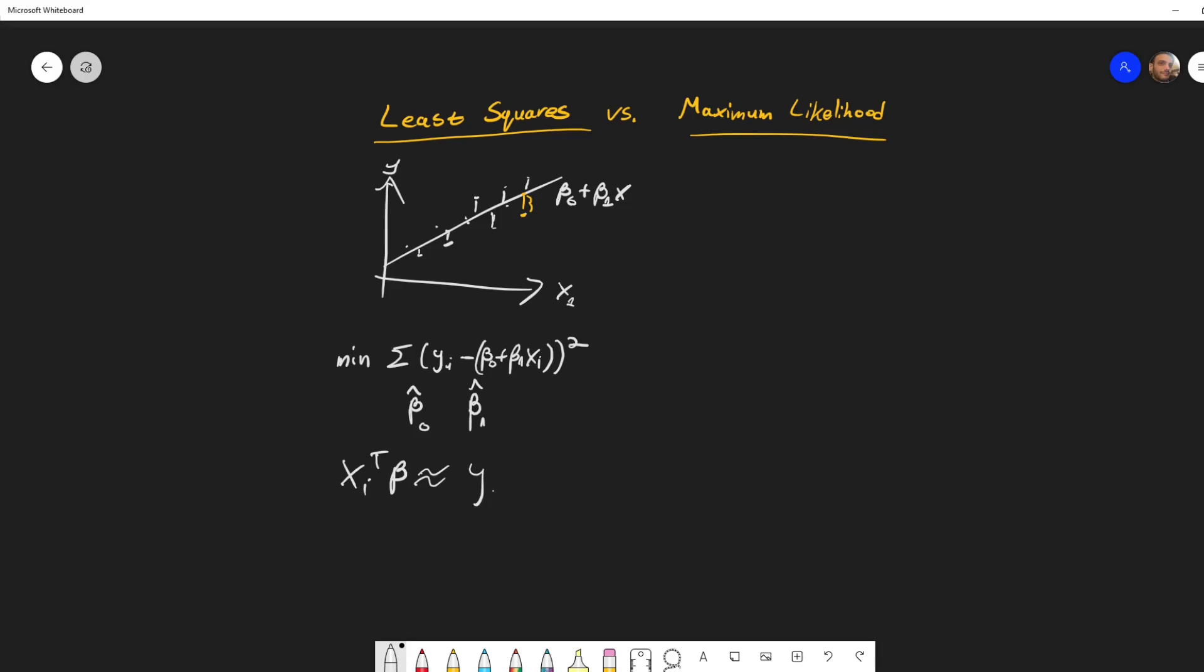Now how is this contrasting to maximum likelihood? Well in maximum likelihood we assume some distribution on the y's. Okay so we assume that the y's are, let's talk about the normal case, that the y's are normally distributed.